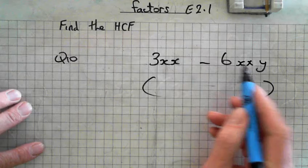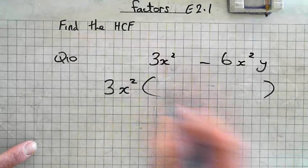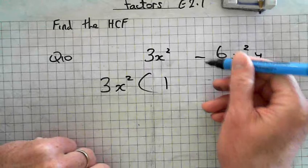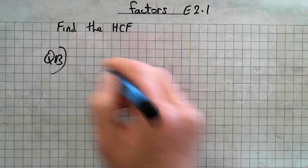Question 10. Where is it? 3x squared. 3x squared minus 6x squared y. So anyway, x squared is x times x and x squared is x times x, isn't it? Yeah. So, the biggest number to divide into 3 and 6. 3. I can take 2x's from both sides, can't I? 3x squared. I can take x squared. 3x squared from both sides.